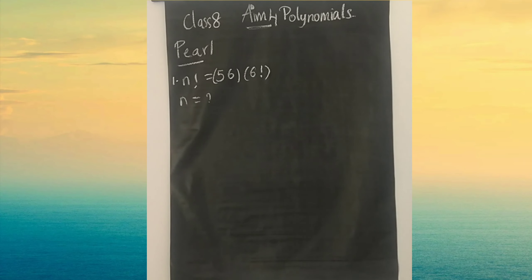Hi everyone, welcome to Wish Problems. Today we will be looking at Class 8 M4 polynomials Pearl package first question. The question says n factorial is equal to 56 into 6 factorial. So we have to find the value of n.